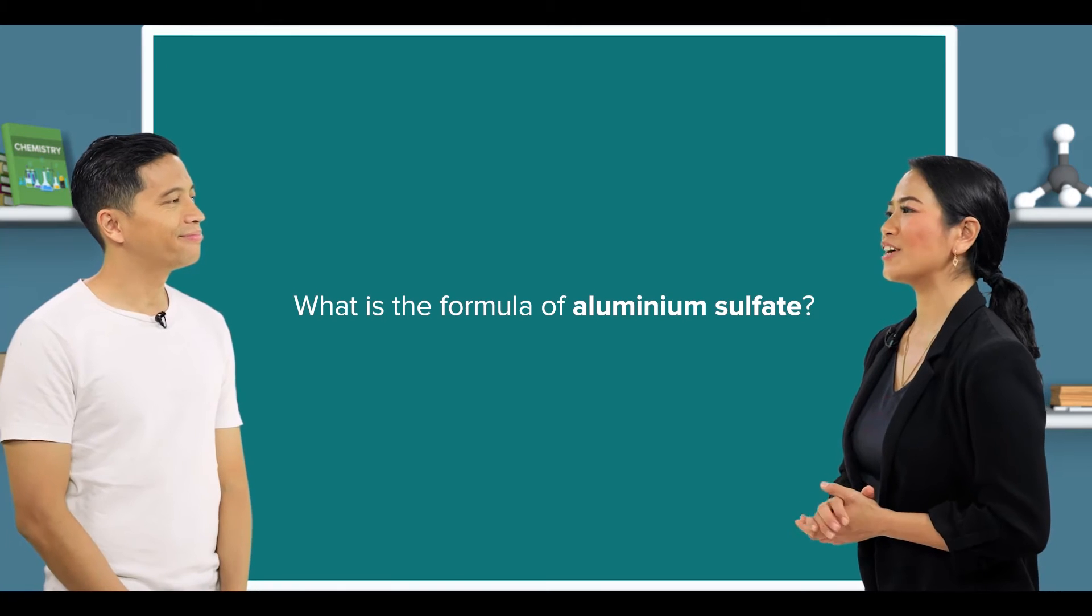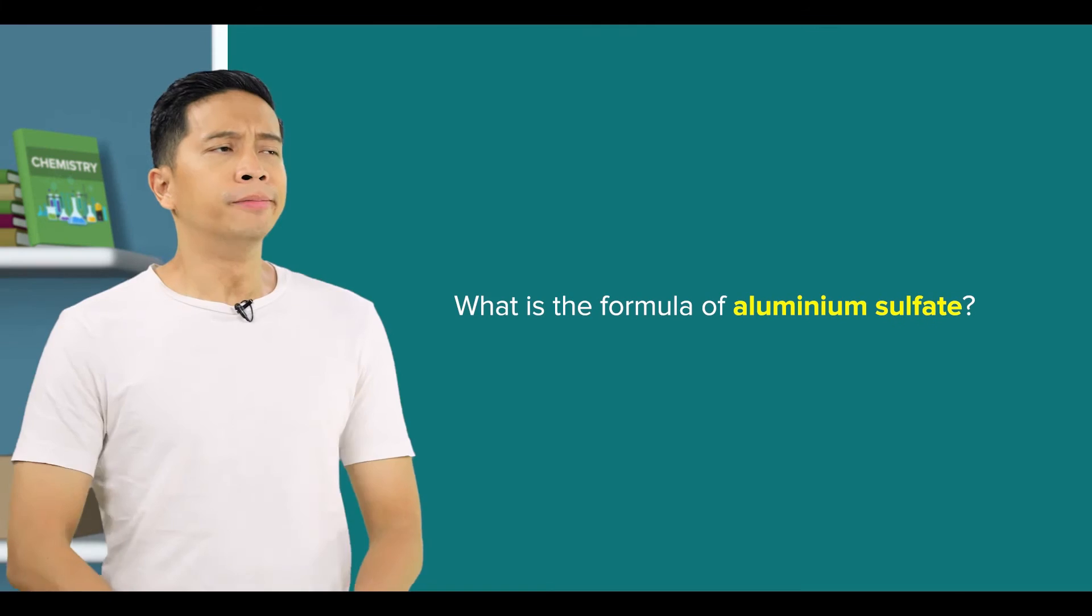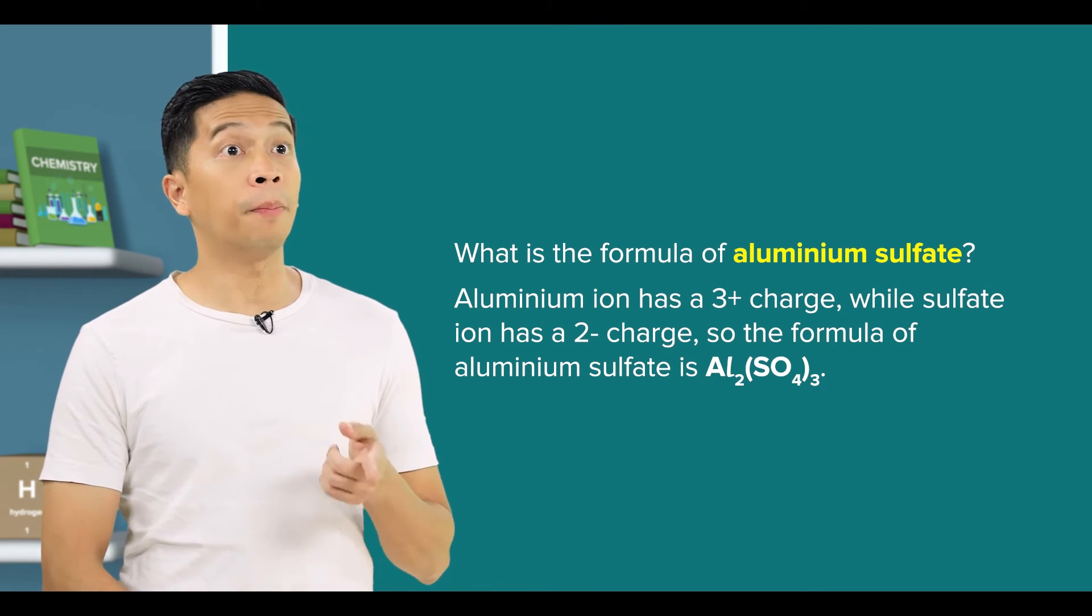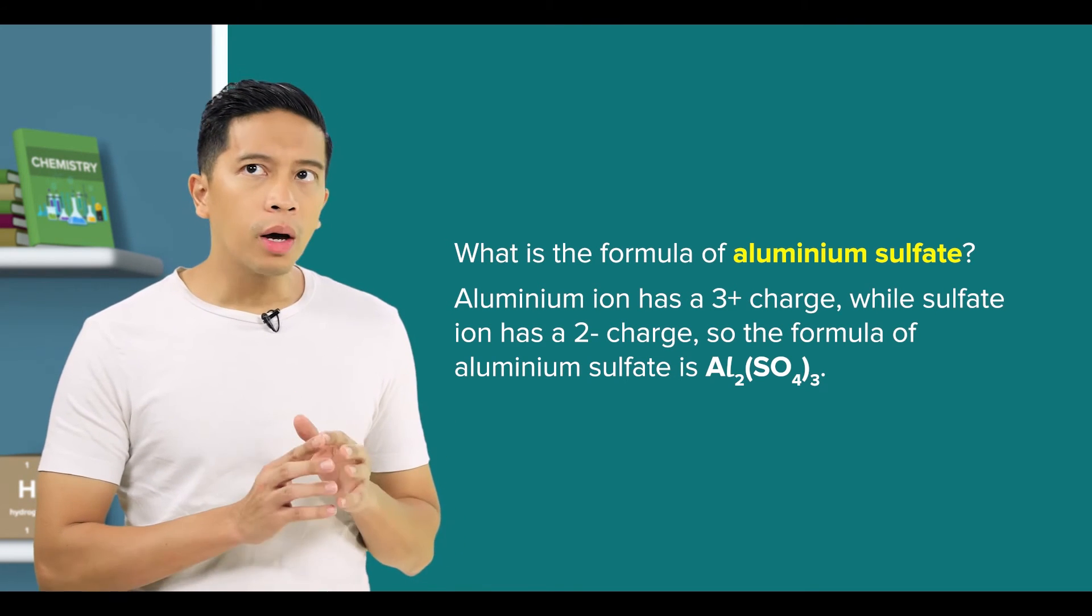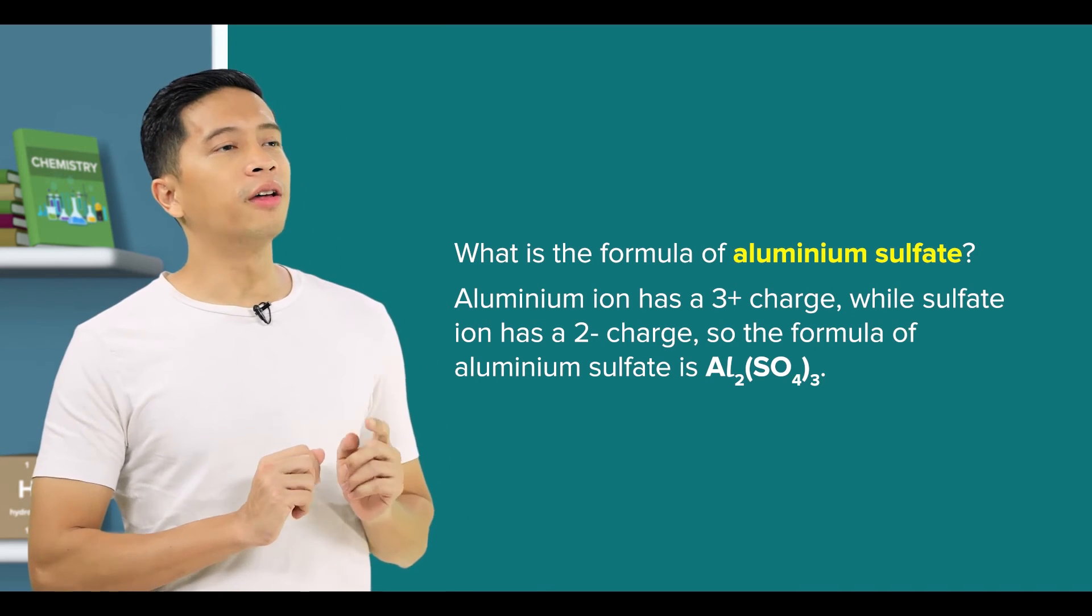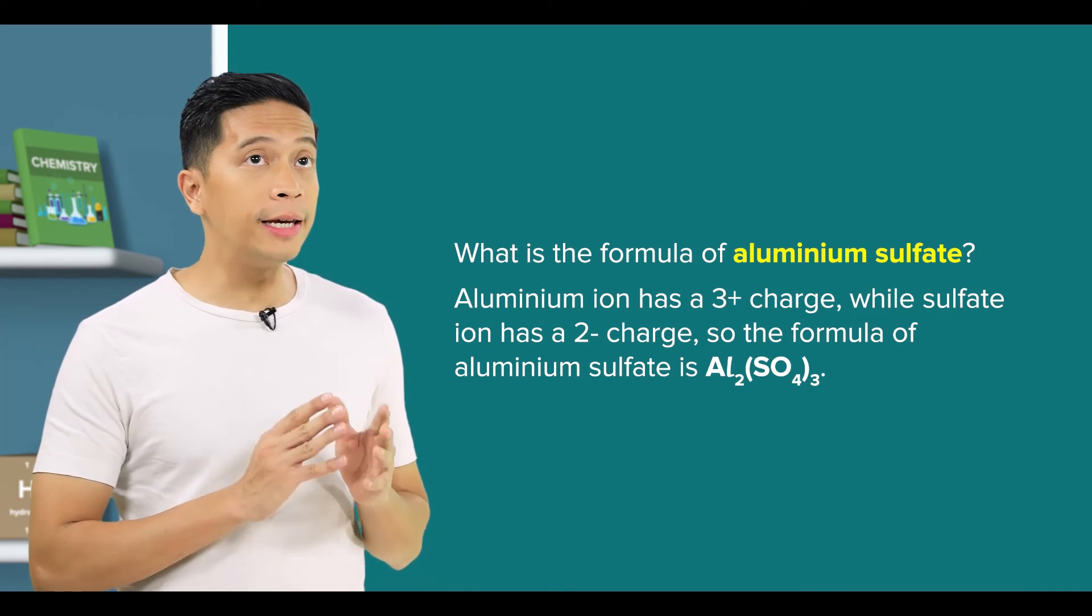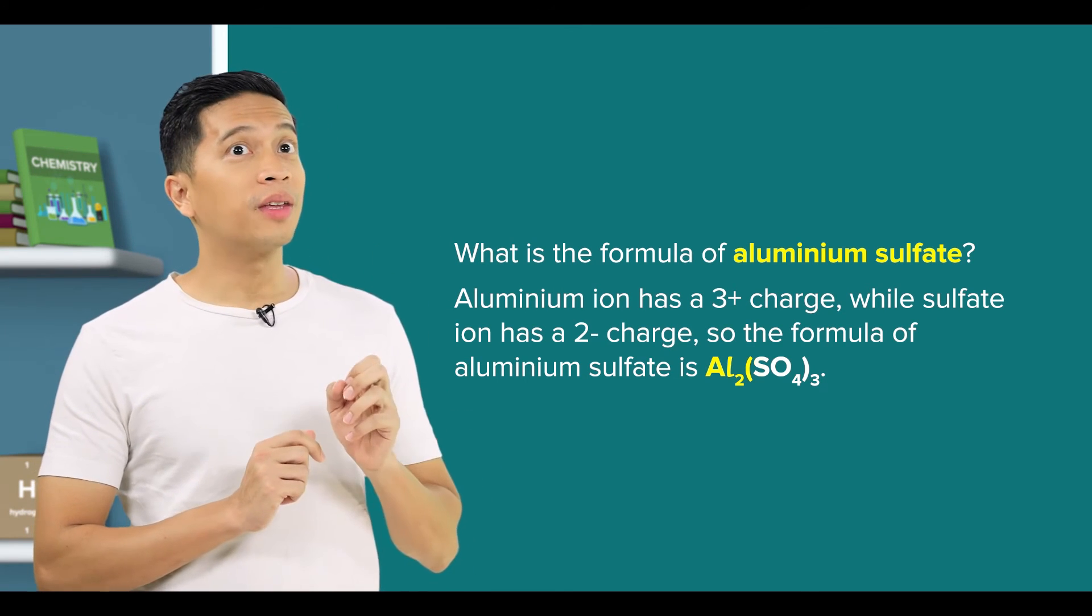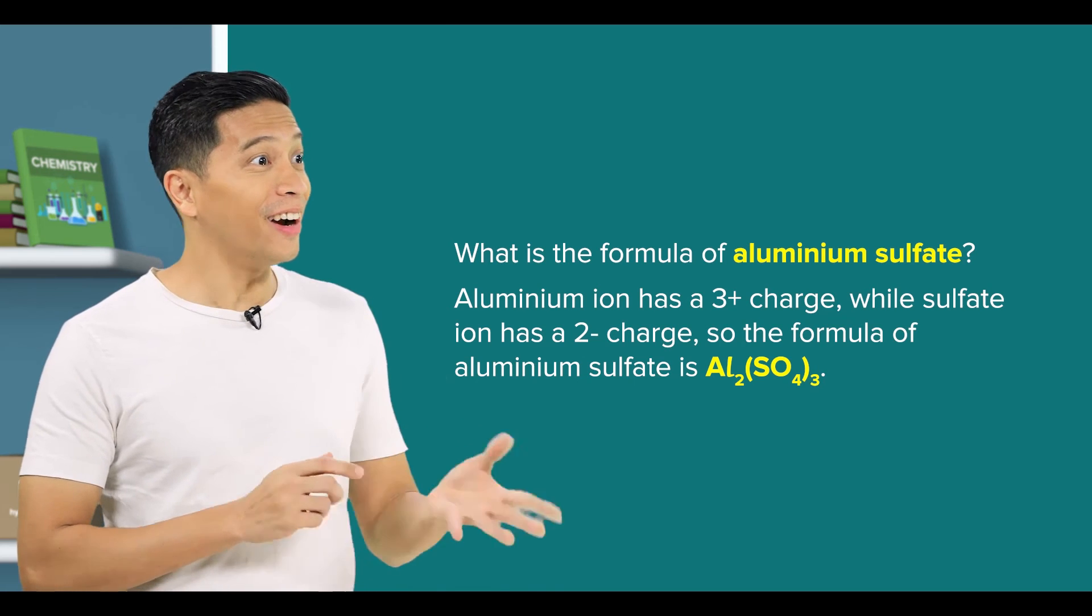What is the formula of aluminium sulfate? Hmm. Aluminium ion has a plus 3 charge, while sulfate ion has a minus 2 charge. So the formula of aluminium sulfate is Al2(SO4)3, right?